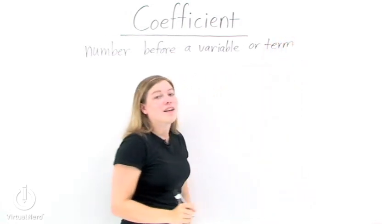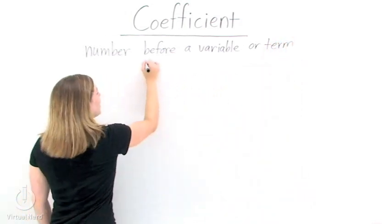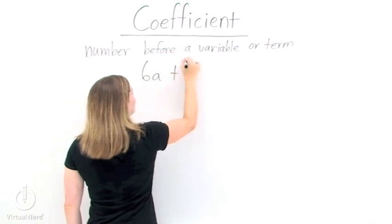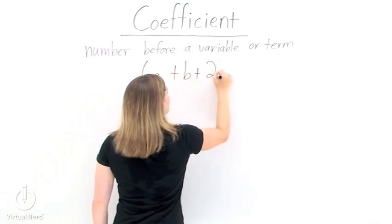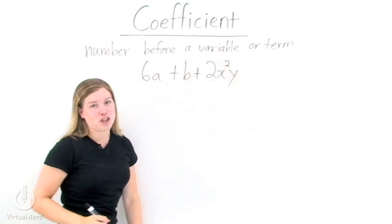OK. Let's look at an example. 6a plus b plus 2x squared y. Let's pick out the coefficients.